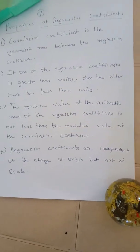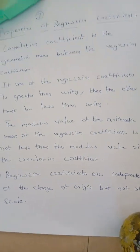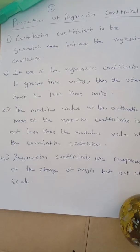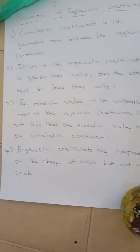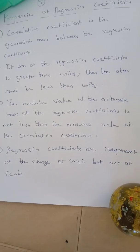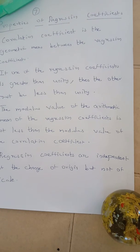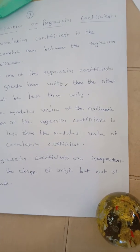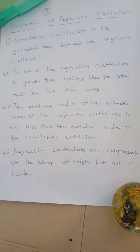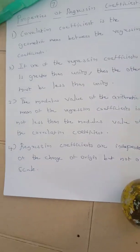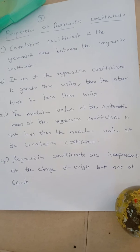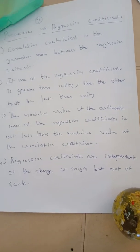Second property: if one of the regression coefficients is greater than unity, the other coefficient will be less than unity. Third property: the arithmetic mean of the modulus of BXY plus BYX divided by 2 is always greater than the correlation coefficient. Fourth property: regression coefficients are independent of change of origin but not of scale, so they depend on scale.